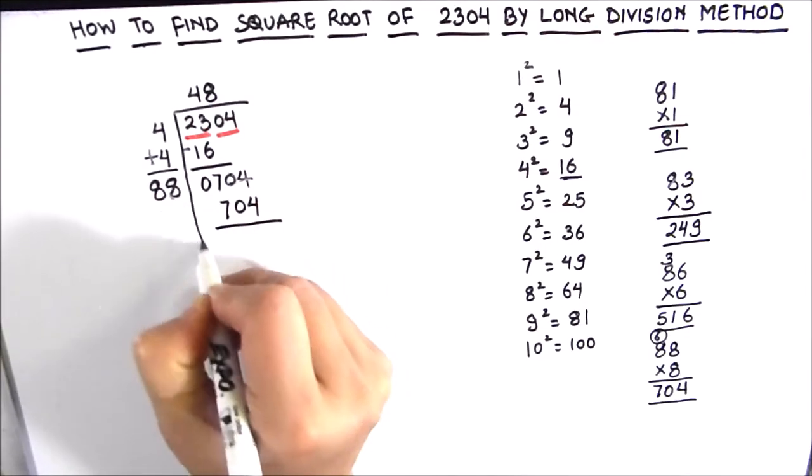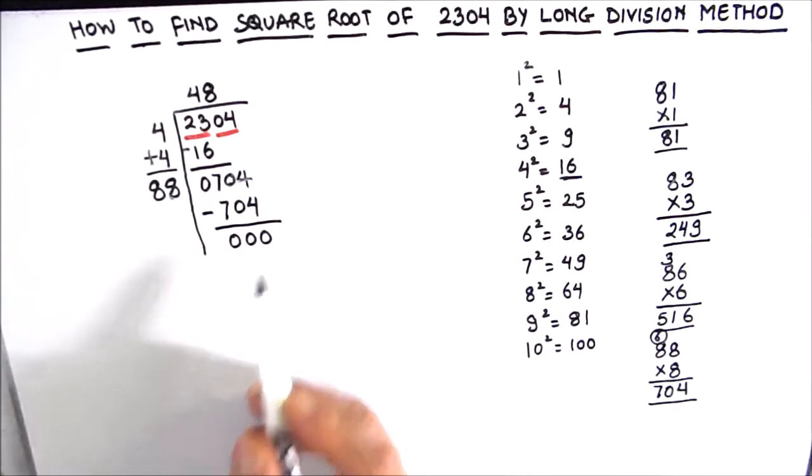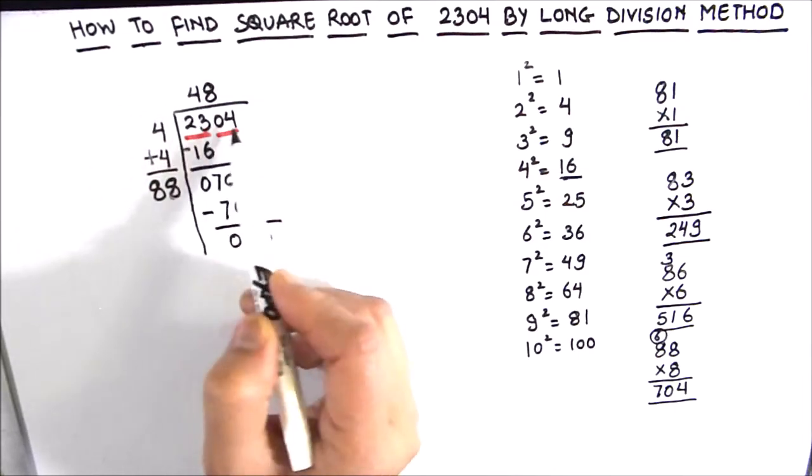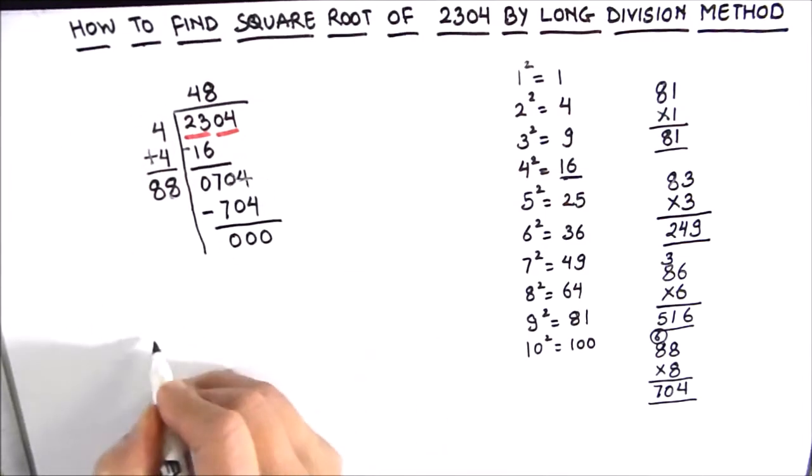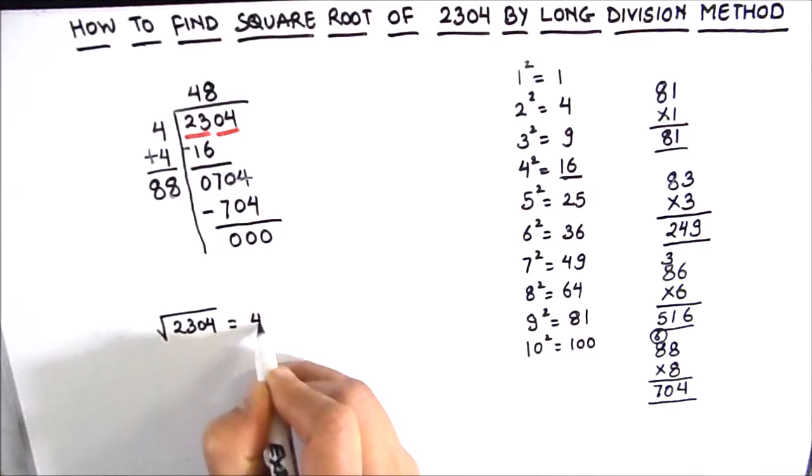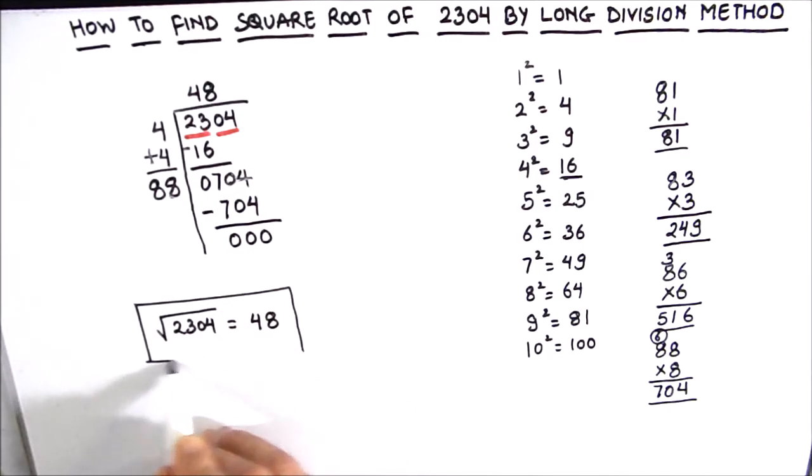Now we are going to subtract the two numbers and the remainder is 0. So here we are going to stop and the number we got in the quotient is the square root of 2304. So the square root of 2304 is 48. This is our final answer. We are going to box the answer. So this is how you can find the square root of 2304 by long division method.